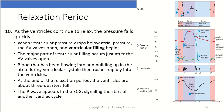At the end of this relaxation period, those ventricles are about 75% full, and then the P wave appears on our EKG, signaling the start of another cardiac cycle.